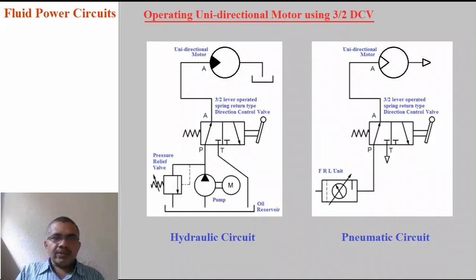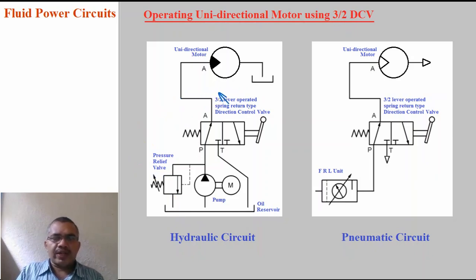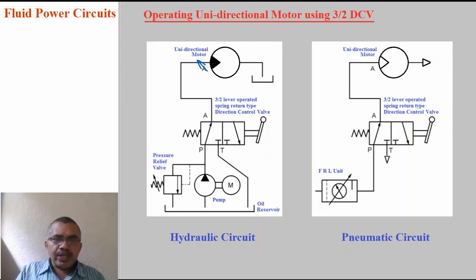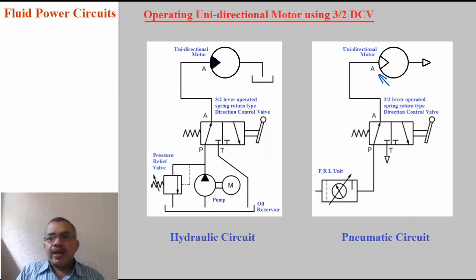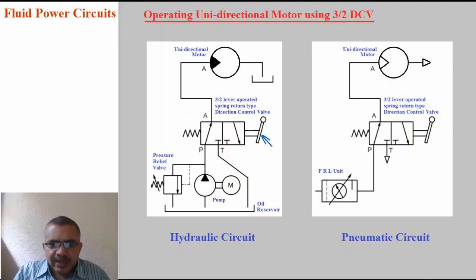The next circuit is operating a unidirectional motor using a 3 by 2 direction control valve. The rest of the circuit is the same as before — only instead of a single acting cylinder, we use a unidirectional motor. The unidirectional motor has one port, which is connected to port A of the 3 by 2 valve. In hydraulic systems, the triangle symbol is filled with black color indicating a hydraulic motor. In pneumatic circuits, the triangle is not filled — that is the air motor. This is the difference between the symbols of hydraulic motor and pneumatic air motor.